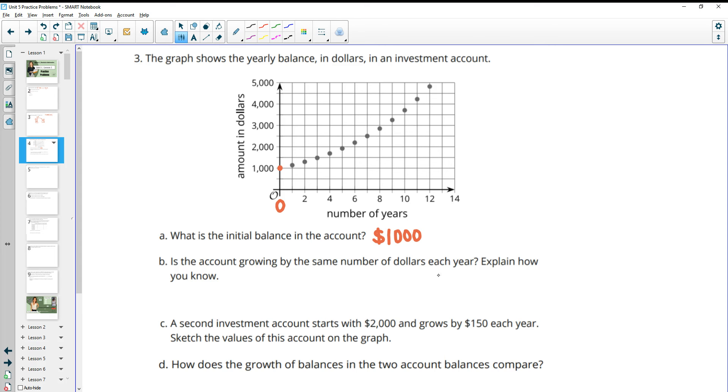Is the account growing by the same number of dollars each year? And how do you know? So if it's growing by the same number, it's going to have a constant rate, meaning that it's going to be a straight line if we were to connect them. So a linear line. And we can see that this one is not linear, it's getting steeper as we go. So then this is going to be no. And we know because the slope between the points isn't constant, meaning not the same or not a straight line.